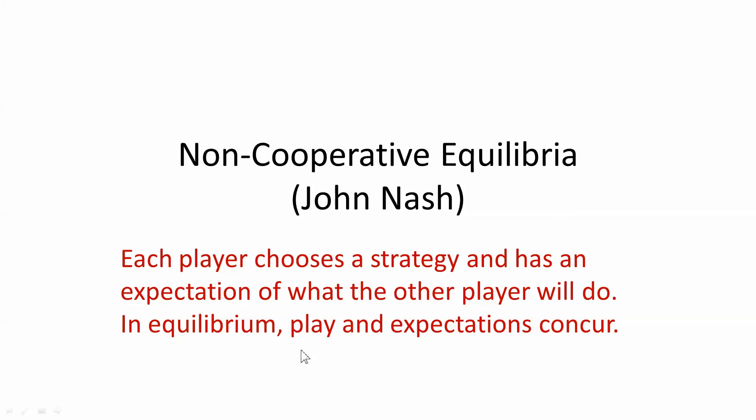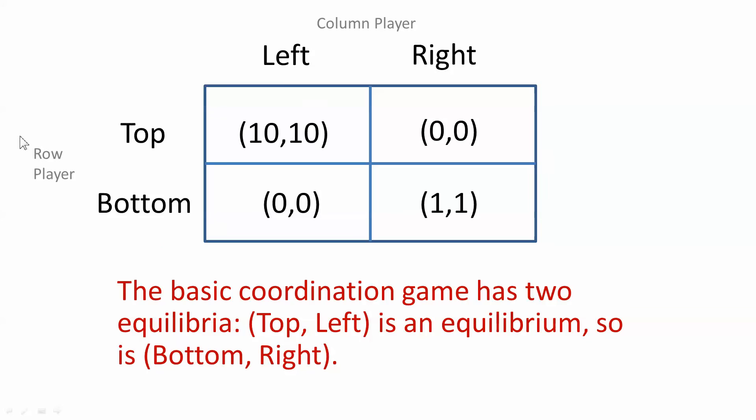Here's the simplest possible game. There are two players, a row player and a column player. The row player chooses either top or bottom. Those are the two strategies. The column player chooses either left or right. Those are the two strategies. The game is completely symmetric. The first entry in the box is what the row player gets. The second entry is what the column player gets.